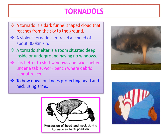Now, how can we take escape measures if a tornado is happening? A tornado shelter is a room situated deep inside or underground having no windows. If a tornado is coming, we have to take shelter deep underground, or shut windows and take shelter under a table or workbench where debris cannot reach.